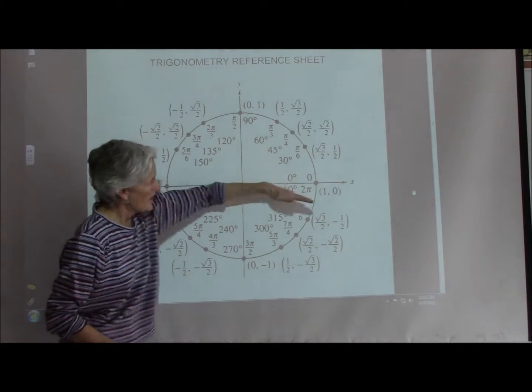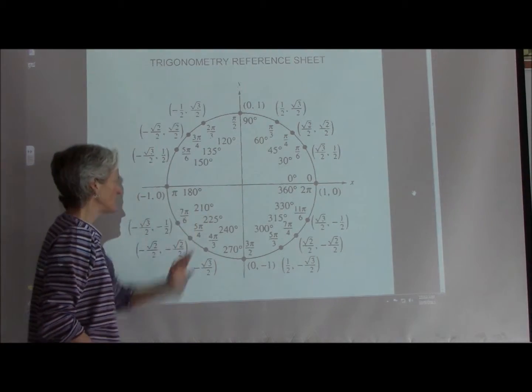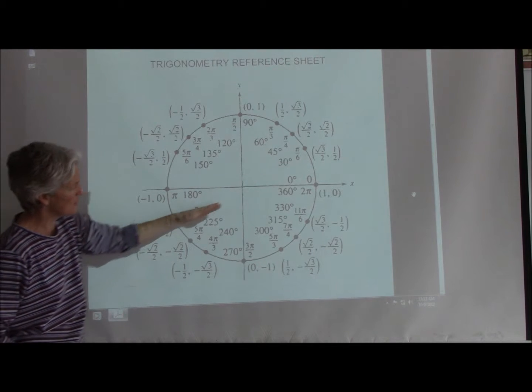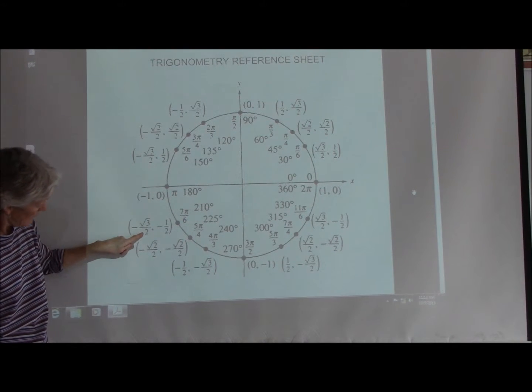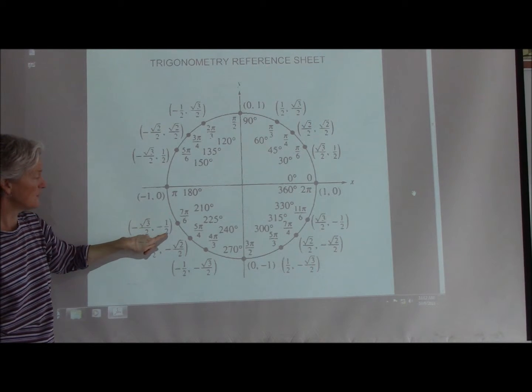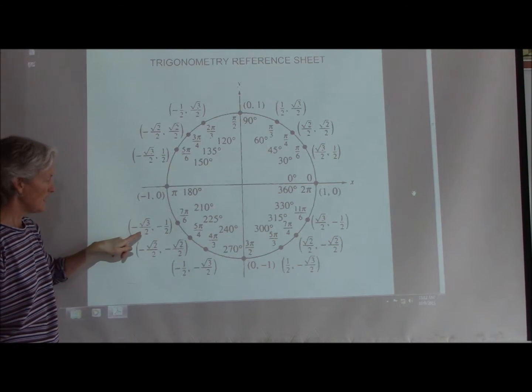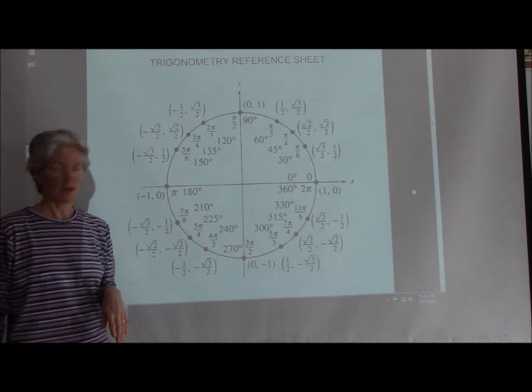Down here in the third quadrant, if I'm rotating all the way, let's say, to 210 degrees, right? Again, I look at the x value to get my cosine, the y value to get my sine, and y over x to get my tan.